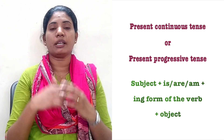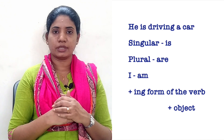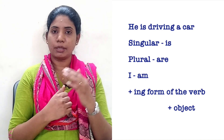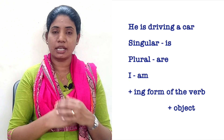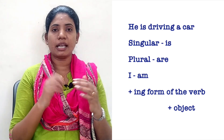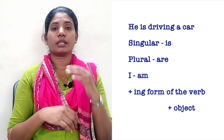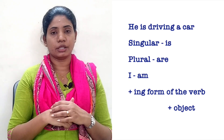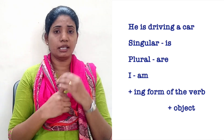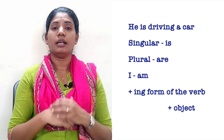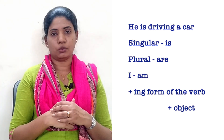For example, 'He is driving a car.' Here, 'he' is the subject. 'Is' is what we call the auxiliary verb. We use is, are, and am. For a singular subject, we use 'is' or 'am.' For a plural subject, we use 'are.' For 'I,' we use 'am.'